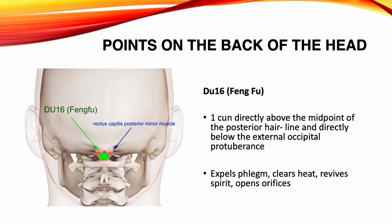Du 16, Feng Fu. Location: wanzun directly above the midpoint of the posterior hairline, and directly below the external occipital protuberance. Functions: expels phlegm, clears heat, revives the spirit, opens orifices. Indications: headache, neck rigidity, vertigo, blurred vision, nose bleeds, sore throat, coma, aphasia, hemiplegia, mental disorders, hysteria, convulsions in children.